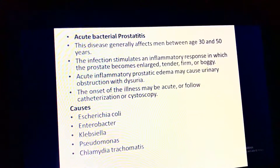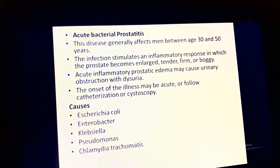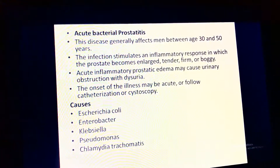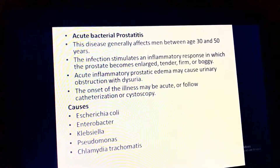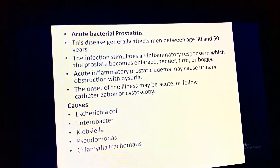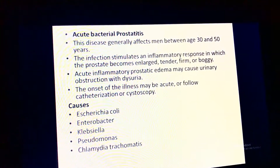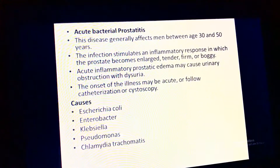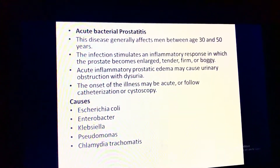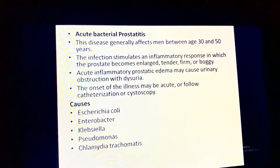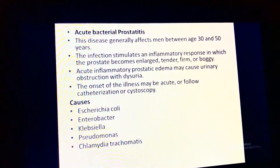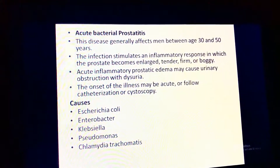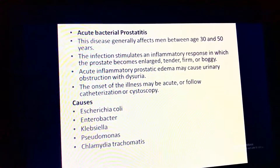The infection stimulates an inflammatory response in which the prostate becomes firm, rigid, and tender. Acute inflammatory prostatic edema may cause urinary obstruction with dysuria. The onset may be acute or triggered through catheterization or cystoscopy. Causes of prostatitis include E. coli, Klebsiella, Pseudomonas, and Chlamydia trachomatis.